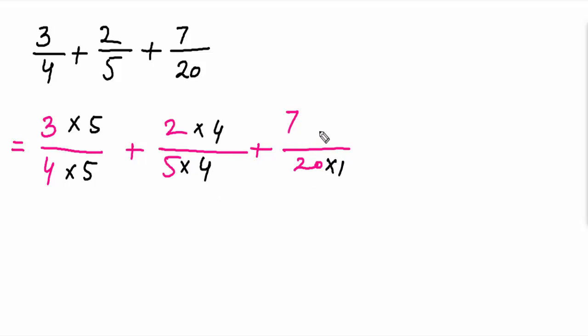So now rewrite the fractions: 3 fives are 15 over 20, plus 2 fours are 8 over 20, plus 7 over 20. You can see that the denominators are same. Now you can simply add the numbers.